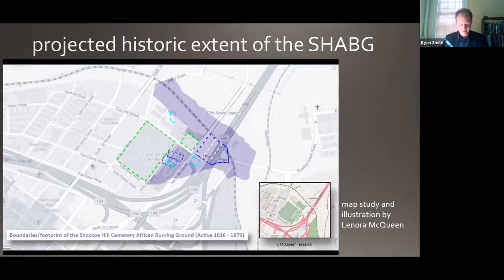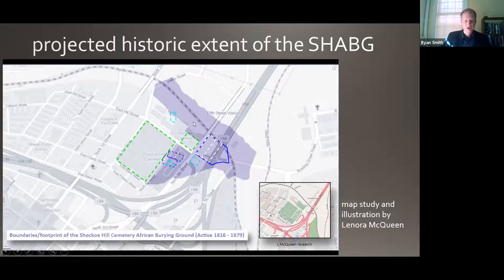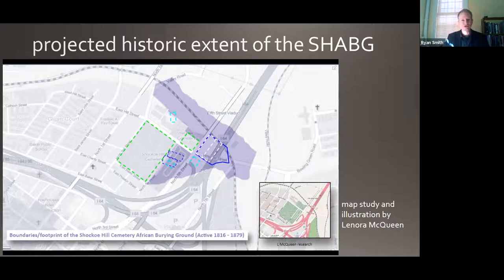This site is centered at Fifth and Hospital Streets. The first two acres were initially set aside across from what would become Hebrew Cemetery and Shaco Hill Cemetery. And then you can see in the shading of this outline what we think are the projected boundaries that the site expanded to. It would grow to encompass perhaps 30 acres or more, containing roughly 22,000 burials of enslaved Richmonders or free people of color. It was active from 1816 to 1879. That stretch of time, the number of burials, and its scope makes it one of the largest burial grounds for the enslaved in the United States.